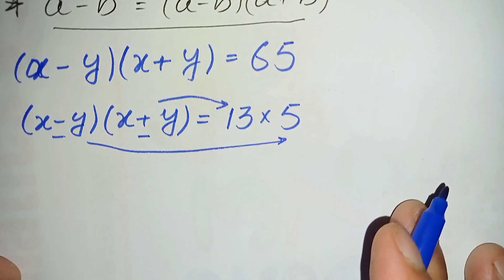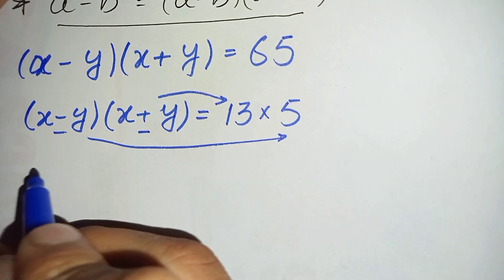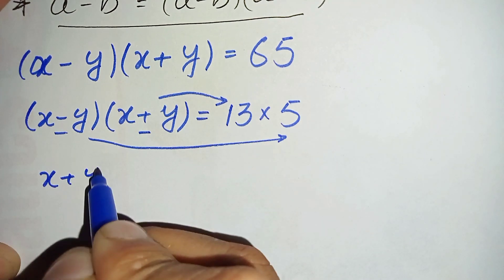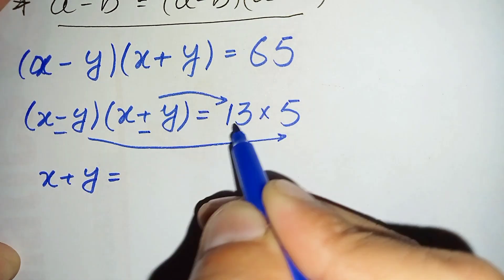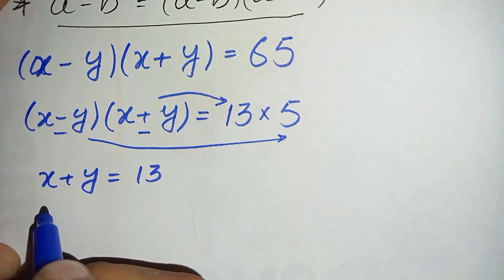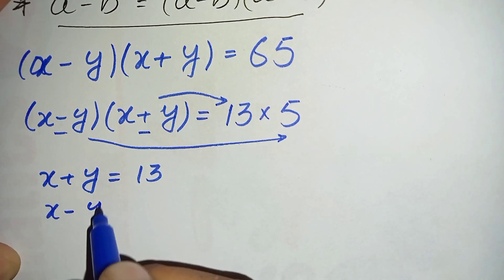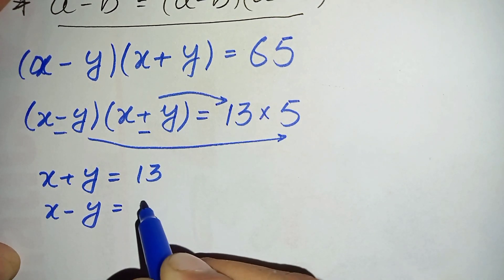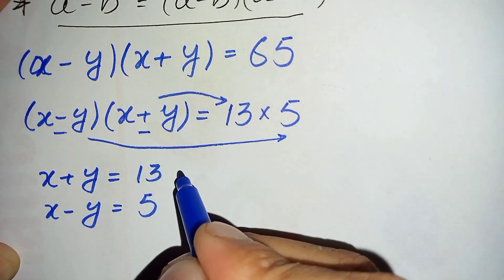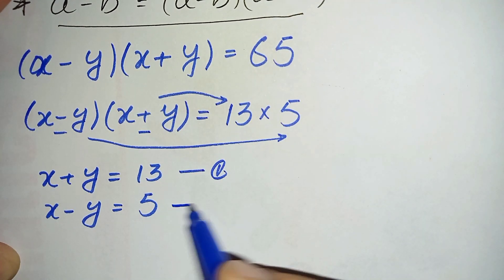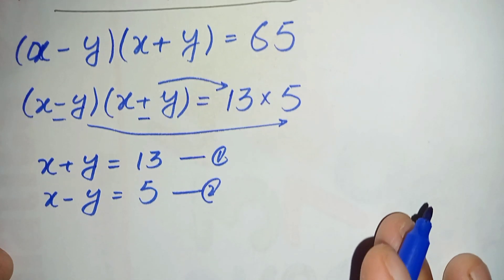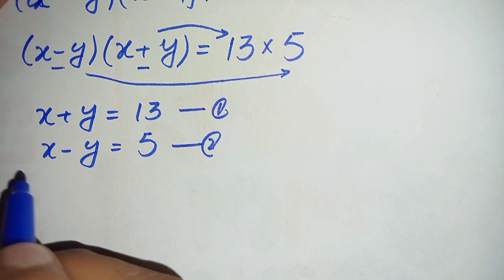From this comparison we get two equations. The first equation is x plus y is equal to 13, and the second equation is x minus y is equal to 5.